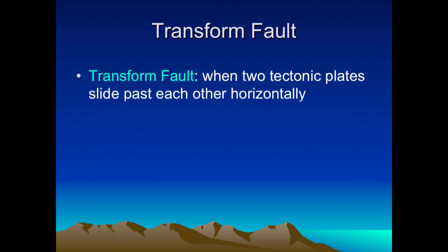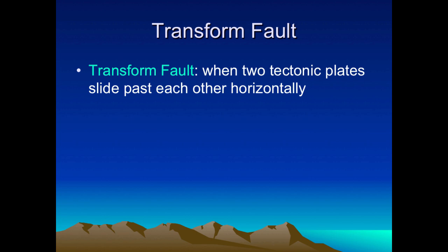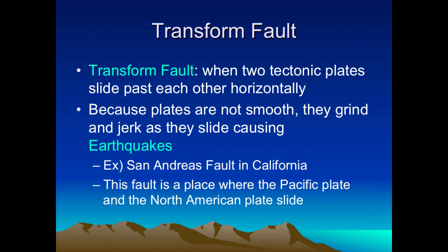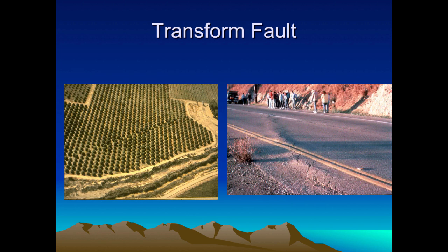Transform boundaries are when two tectonic plates slide past each other horizontally. Because plates are not smooth, they grind and jerk as they slide, causing earthquakes. The San Andreas Fault in California is a good example — it takes place between the Pacific plate and the North American plate. You can see in a picture of California how a row of land appears off-centered, because one part of the field is on one plate and the other part is on another.